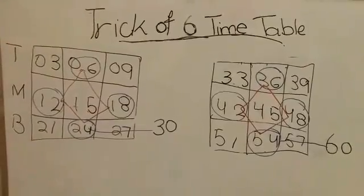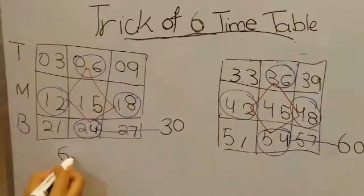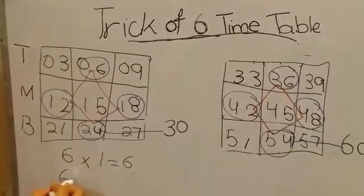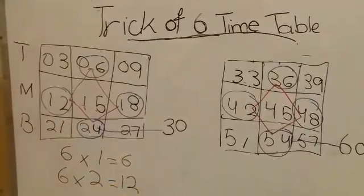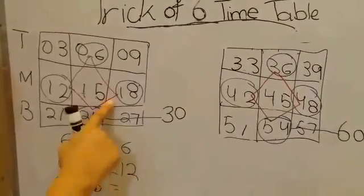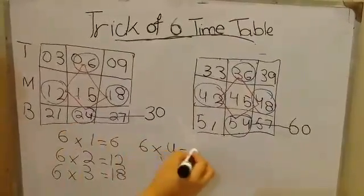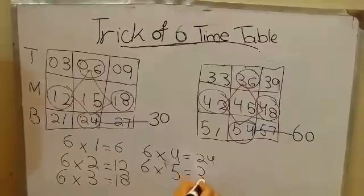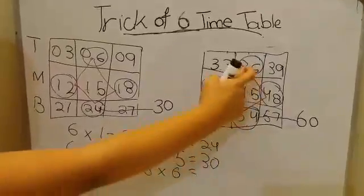Now let's write the sixth whole timetable. Six times one is six. Six times two is twelve. Six times three is eighteen. Six times four is twenty-four. Six times five is thirty. Six times six is thirty-six.